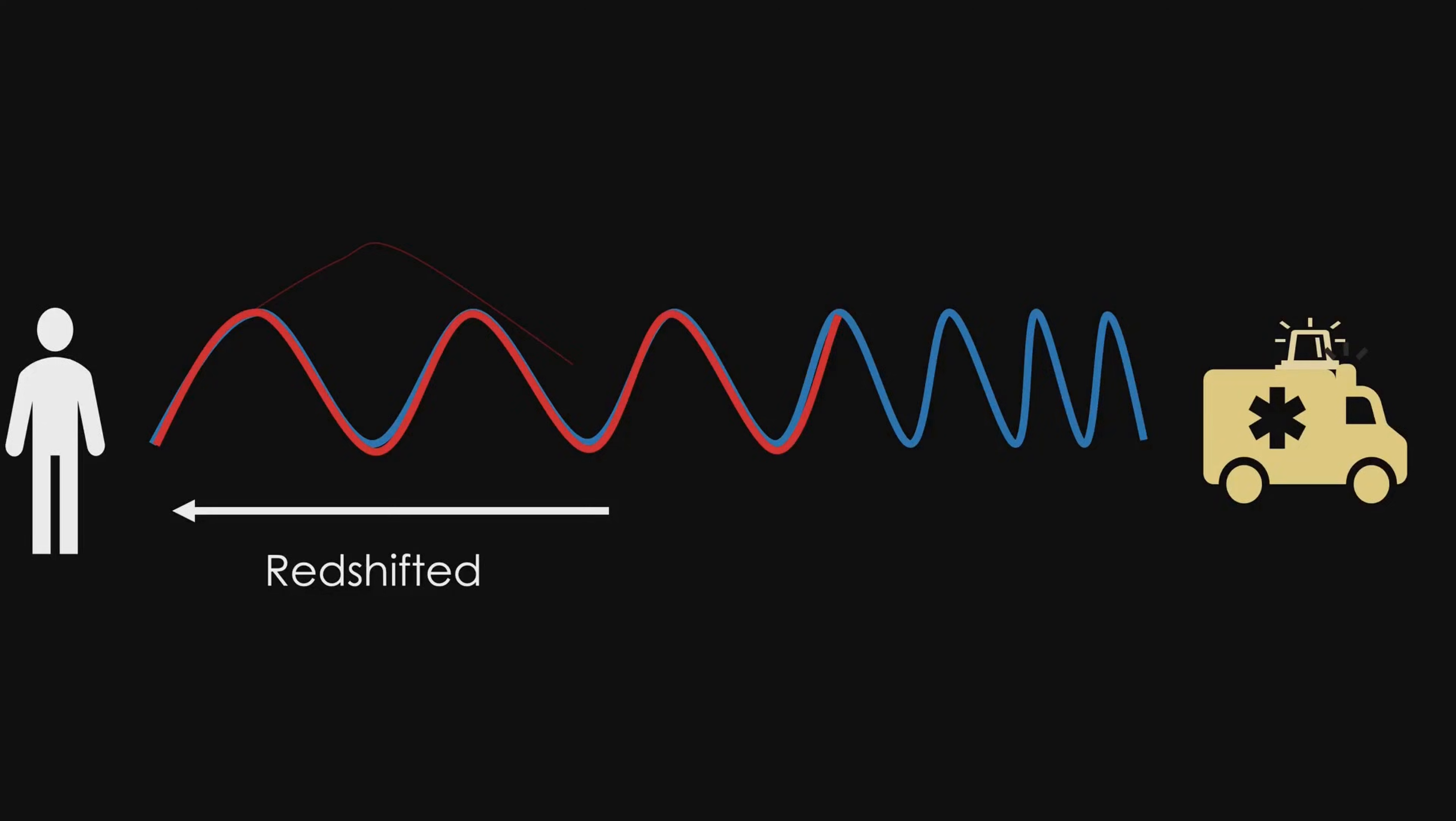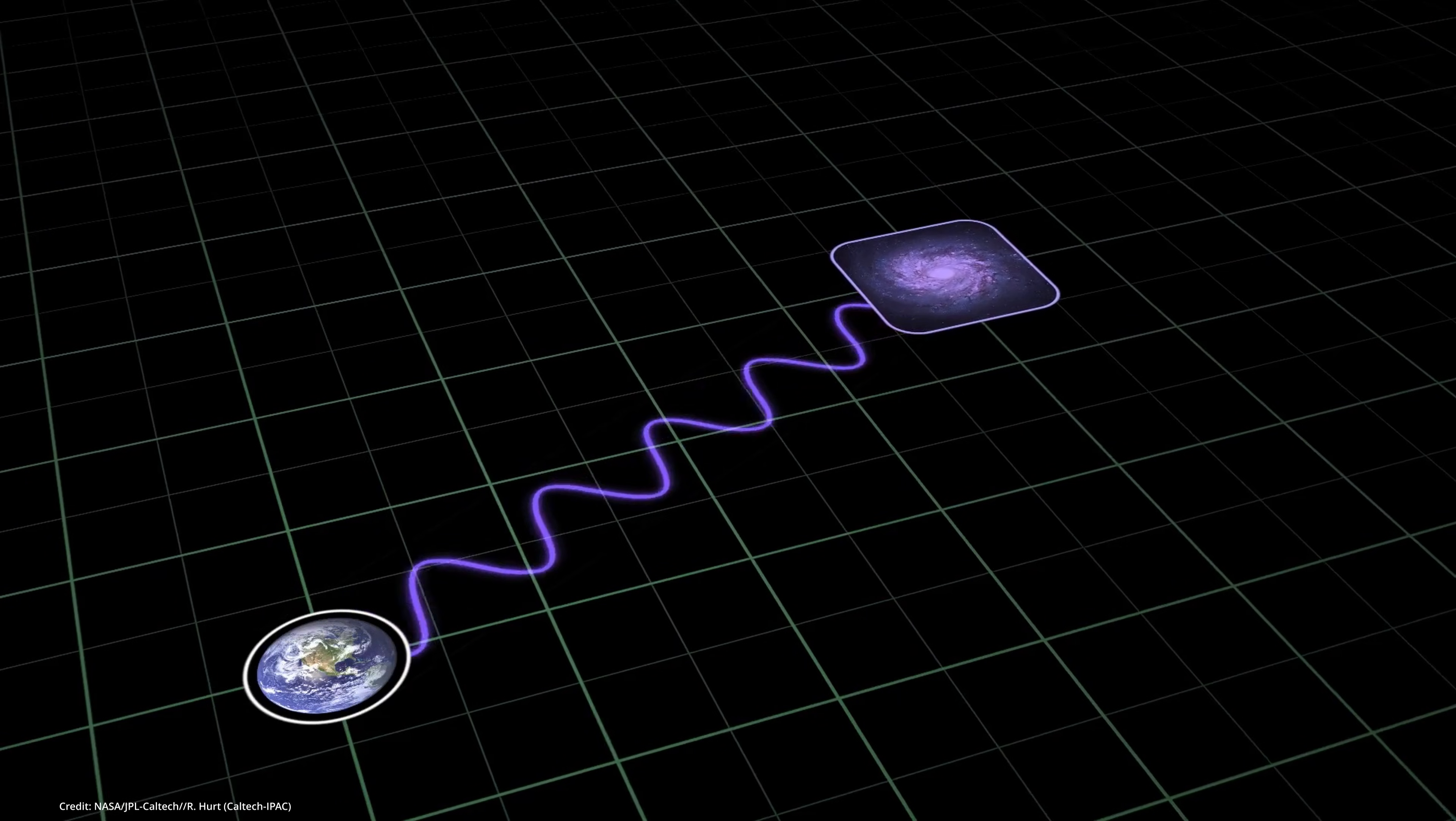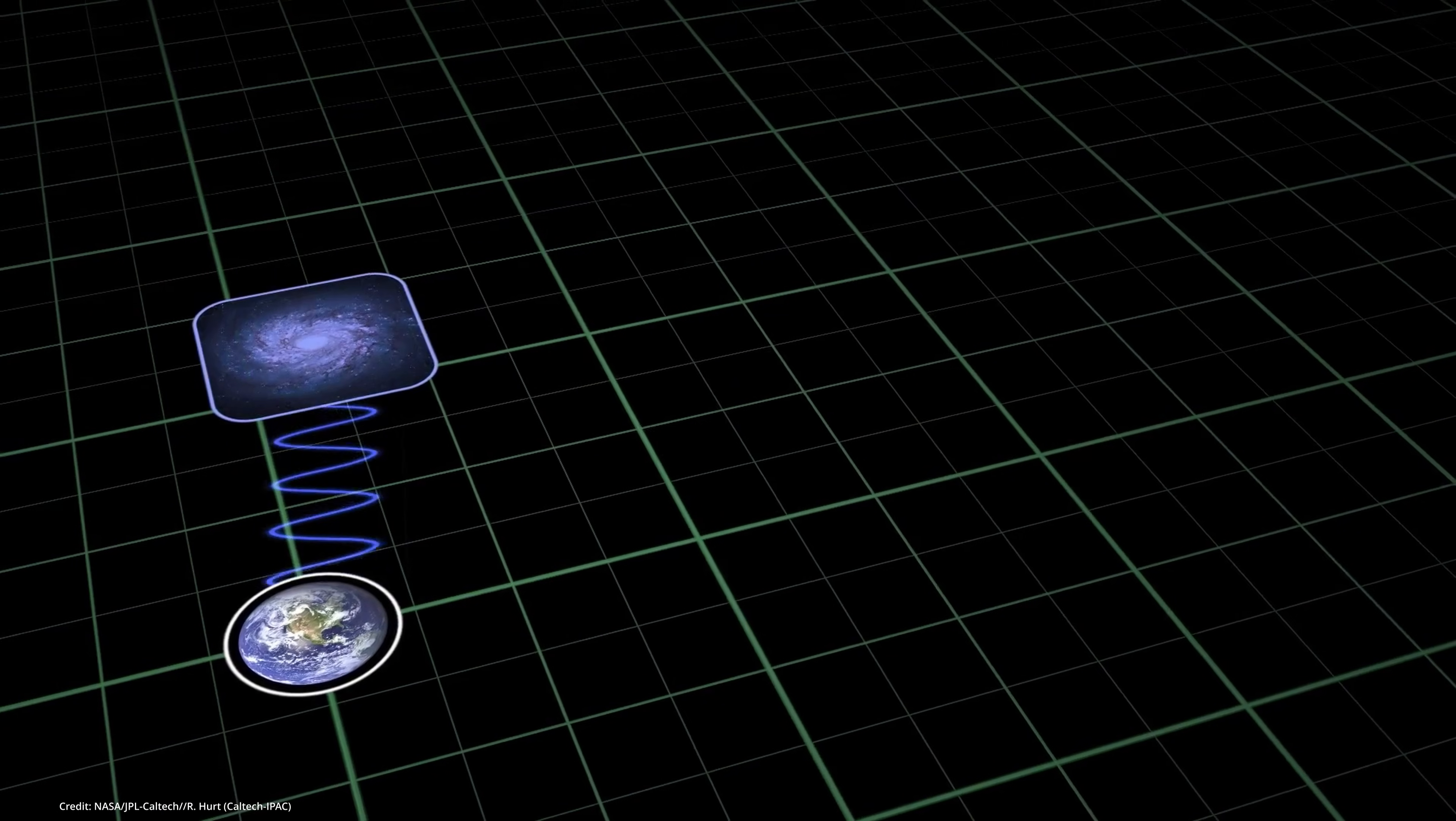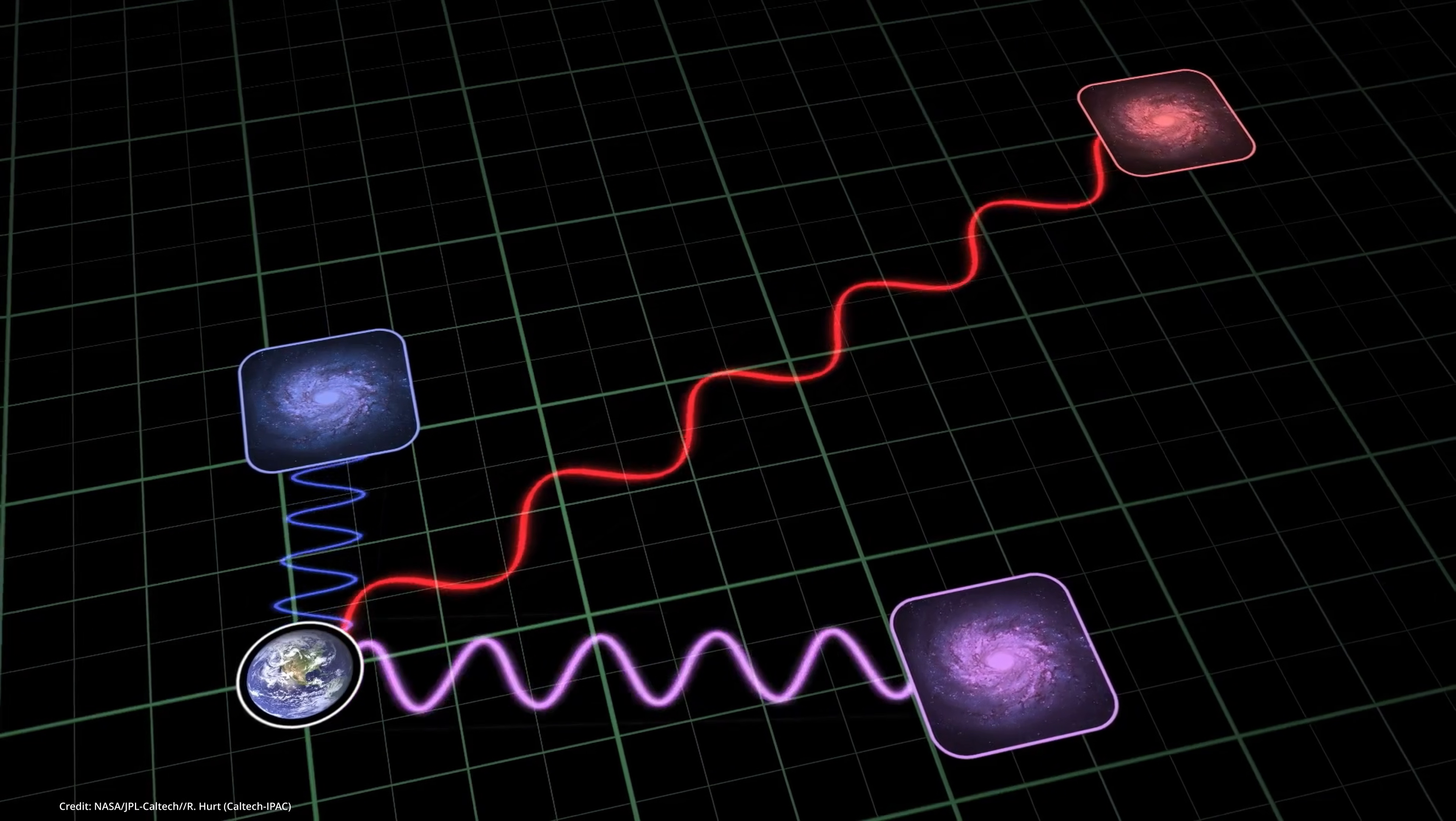Light waves do something similar. As the universe expands, galaxies are moving away from us. The light from these receding galaxies gets stretched, shifted towards the red end of the spectrum. We call this redshift. The more redshifted the light, the faster the galaxy is moving away, and crucially the farther away it is from us. Redshift is like a cosmic speedometer and distance indicator all in one.